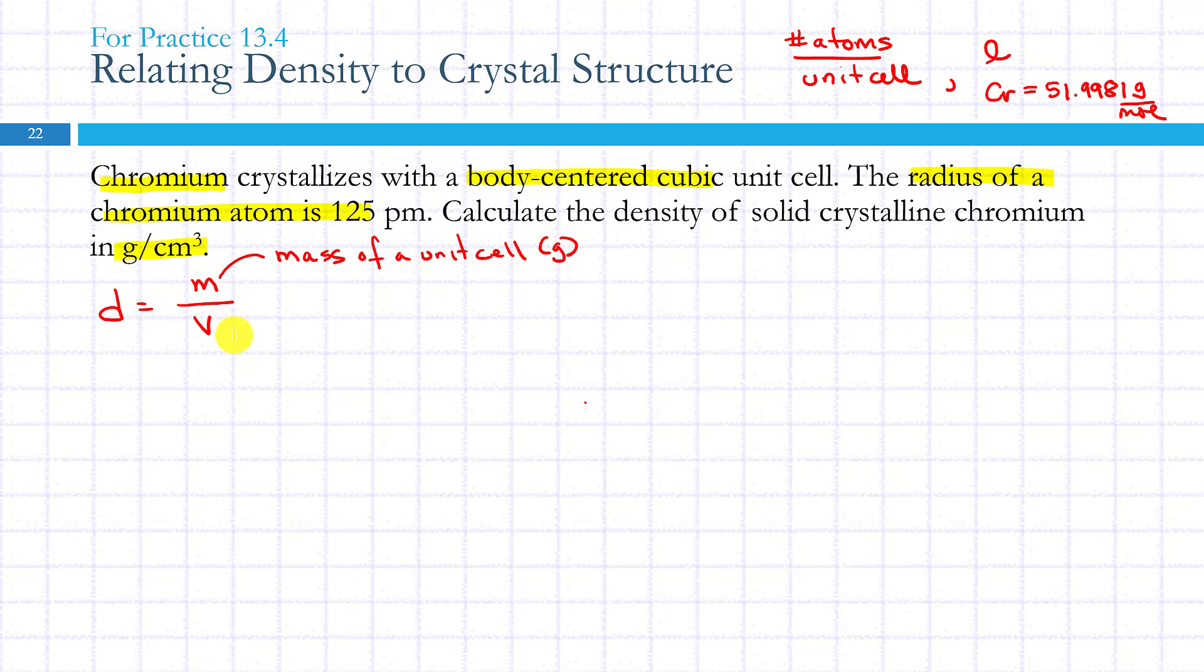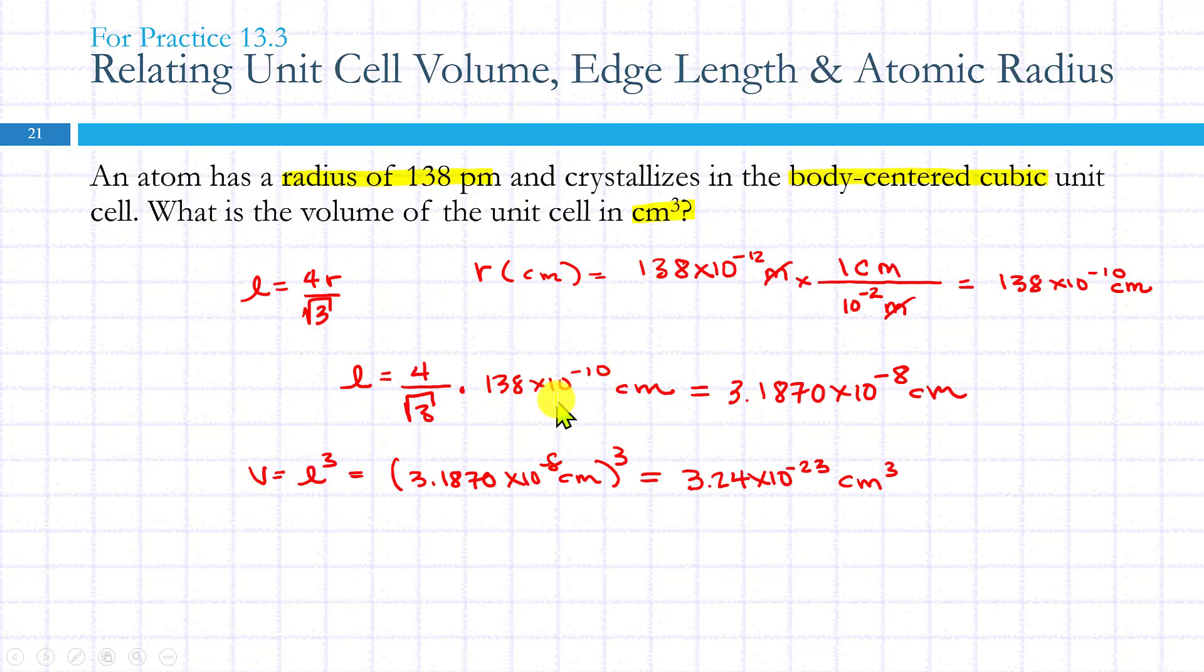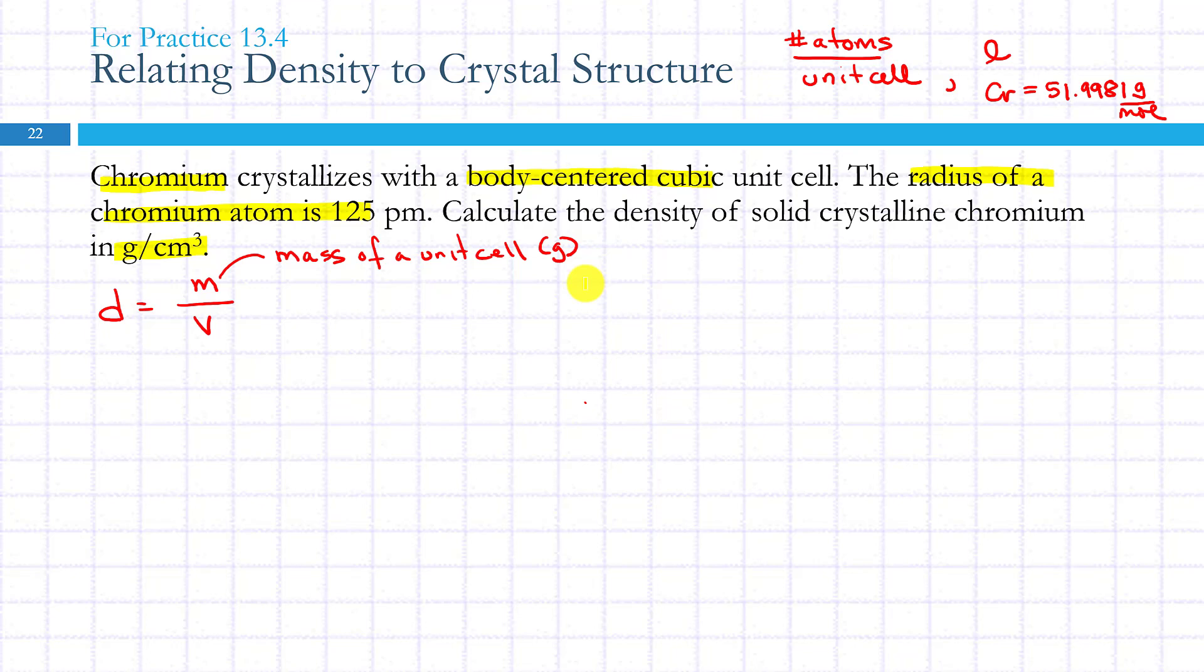The density needs to come out in grams per centimeter cubed. Then what we're going to do is very similar to the problem we did at the end of the last section. We'll calculate the volume of a unit cell. We'll need to know the edge length equation in relationship to radius, and we need to know it in centimeters so that we can cube it and get the volume of the unit cell.